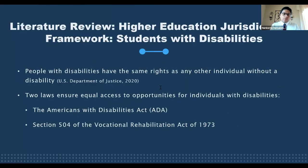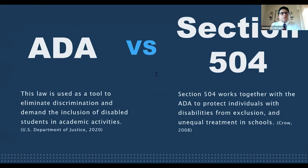Starting with the jurisdictional framework around students with disabilities in the U.S.: the Department of Justice has made clear that people with disabilities have the same rights as any other individual. There are two laws that ensure equal access: the Americans with Disabilities Act and Section 504 of the Vocational Rehabilitation Act of 1973. The ADA, whose 30th anniversary was marked on July 26, 2020, protects access and opportunity across community life including education, and is used to eliminate discrimination and demand inclusion of disabled students in academic activities.